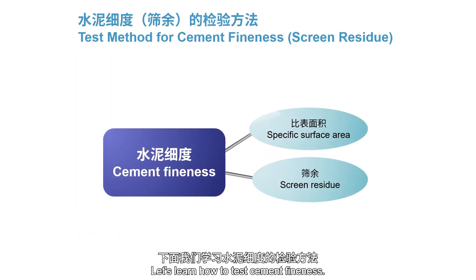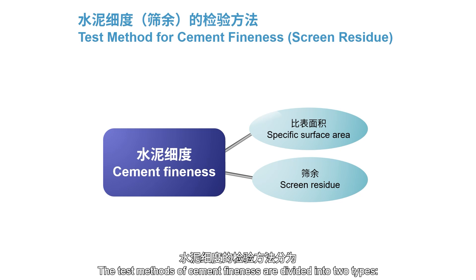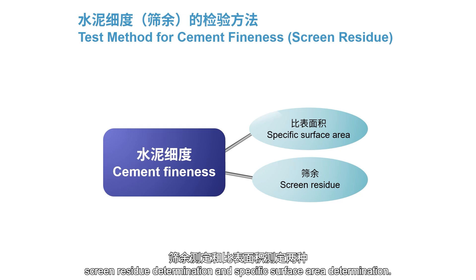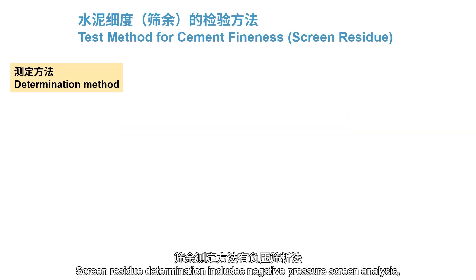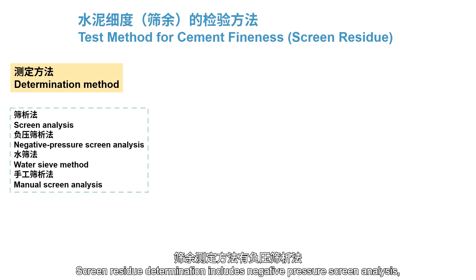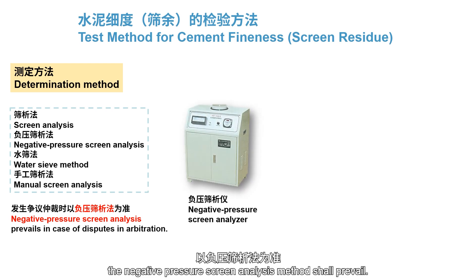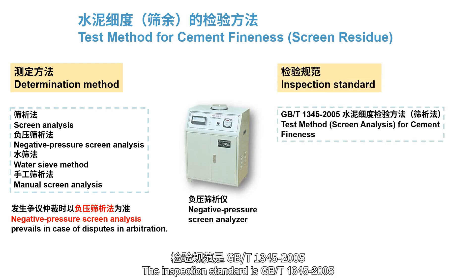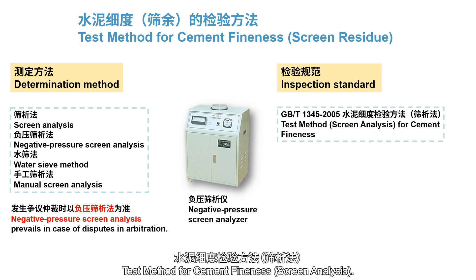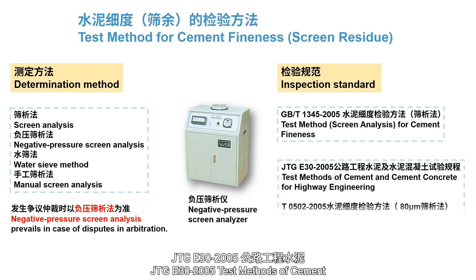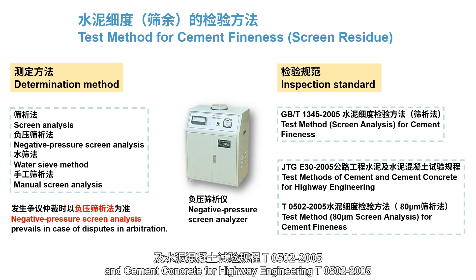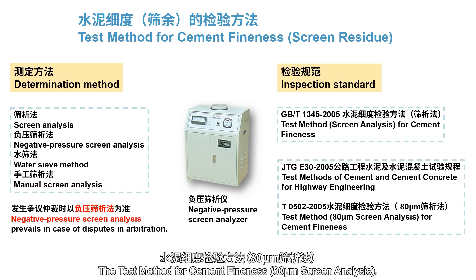Let's learn how to test cement fineness. The test methods of cement fineness are divided into two types: screen residue and specific surface area. Screen residue determination includes negative pressure screen analysis, water screen, and manual screen analysis. In case of dispute arbitration, the negative pressure screen analysis method shall prevail. The inspection standard is GBT-1345-2005, test method for cement fineness — screen analysis. Highway discipline can also adopt JTGE30-2005, test methods of cement and cement concrete for highway engineering, T0502-2005, the test method for cement fineness, 80 micrometers screen analysis.